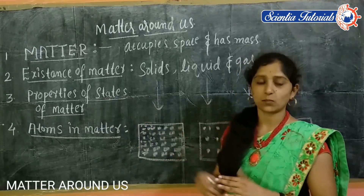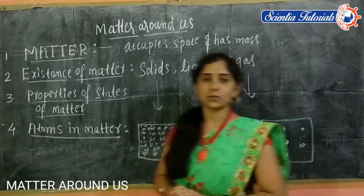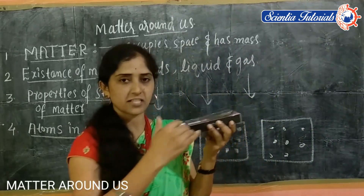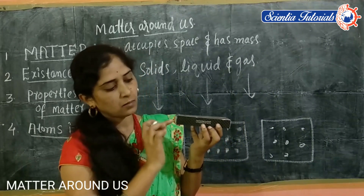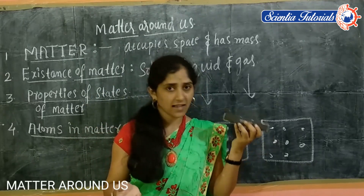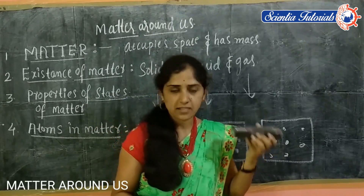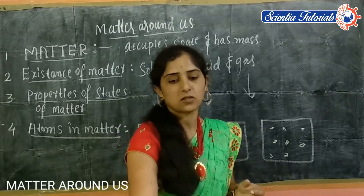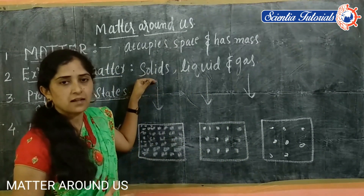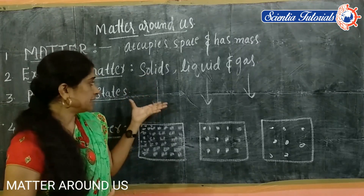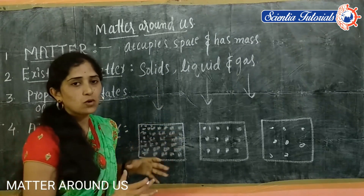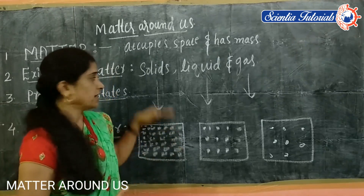What are the properties of solids? Here, let me show you. This is a box. This box has a particular shape and length, breadth, and height. So we can say that this solid state has a particular mass. It has mass, volume, and a particular shape. Solid materials are rigid. So solid materials have a particular mass and shape, and their atoms are arranged in a fixed manner — that means a closely packed manner. There is no gap in between the atoms in the solid state.